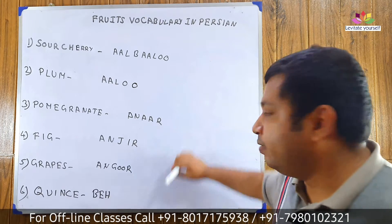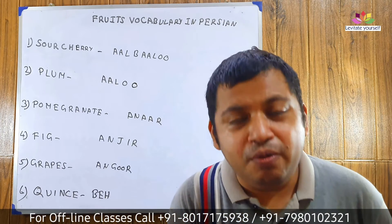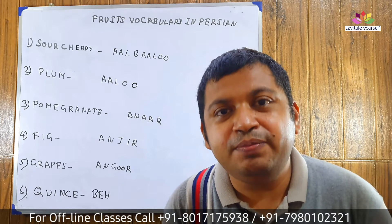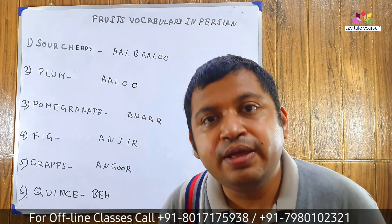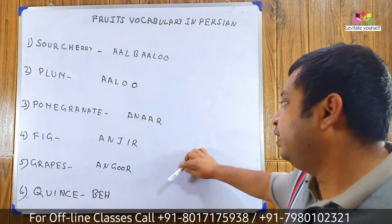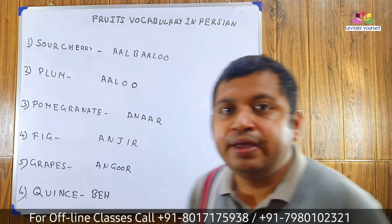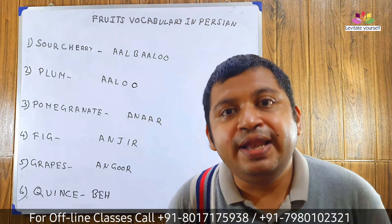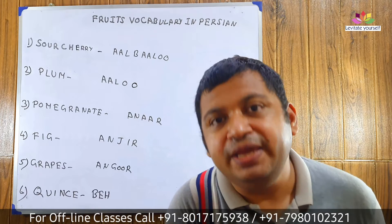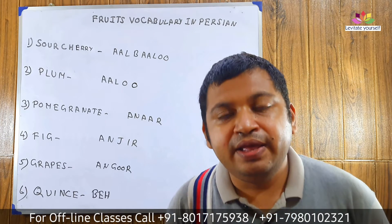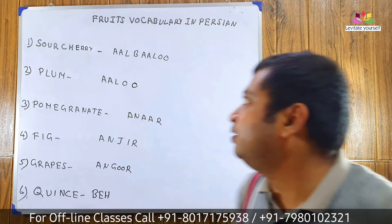Grapes: Angoor. Let's pronounce it with me: Angoor. Come to the next word. Quince: Beh. Let's pronounce it with me: Beh. Now let's repeat it all again.